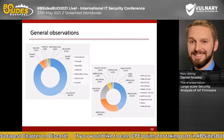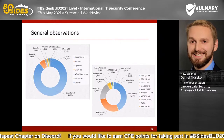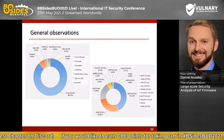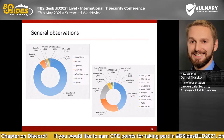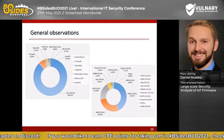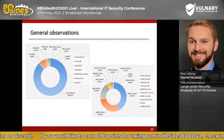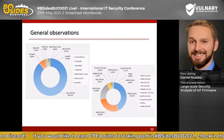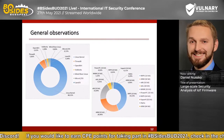The statistics about identified CPU architecture show that most devices are based on MIPS and ARM CPUs, which is very common for IoT devices. But we also have some less common architectures like M68K from Motorola or SuperH, a microcontroller from Hitachi.